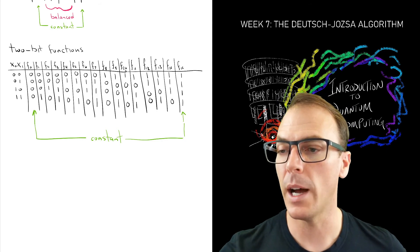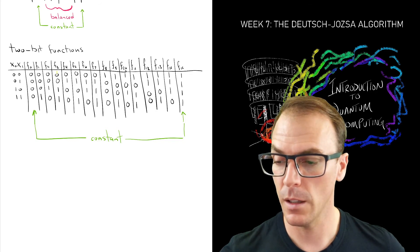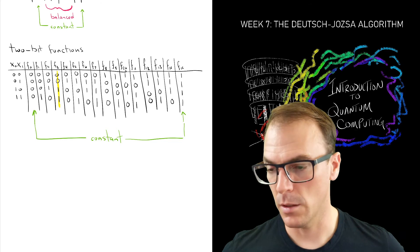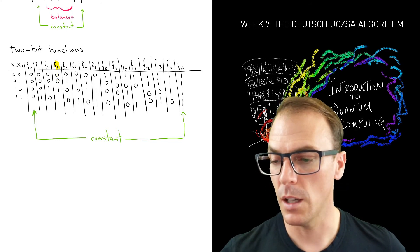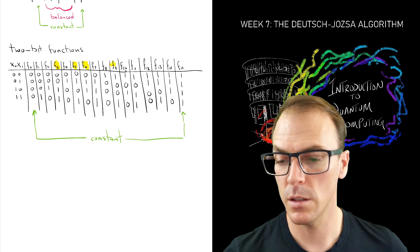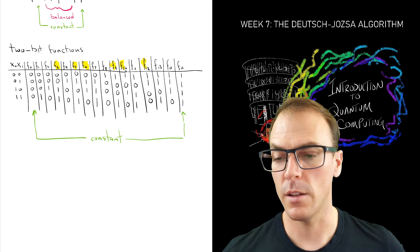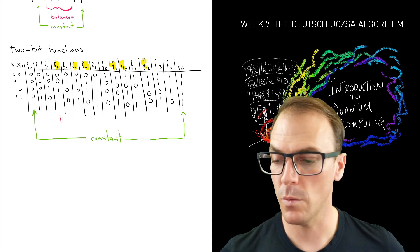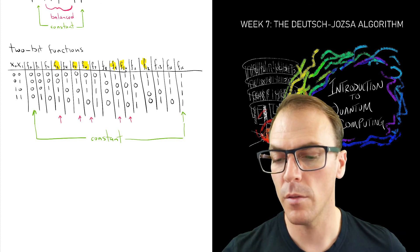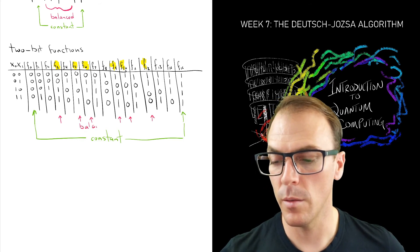And let's try to identify the balanced functions. So these are the ones that have the same number of zeros and ones. There's this one. Let's do it this way. There's this one. And this one. And this one. And I think that's all of them. So there's one, two, three, four, five, six balanced functions.